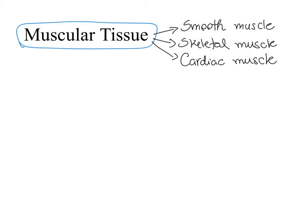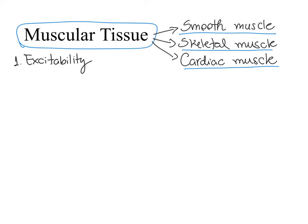But besides these differences, they are all within the muscular tissue category. With that in mind, you can expect that they have common properties. There are four special properties found in muscular tissue — in smooth muscle, skeletal muscle, and cardiac muscle. These properties are excitability, contractility, extensibility, and elasticity.